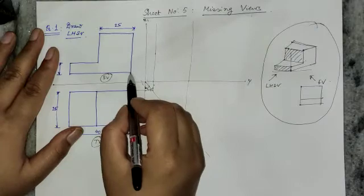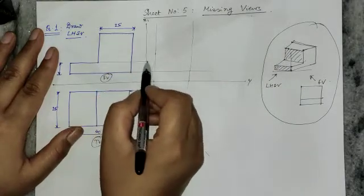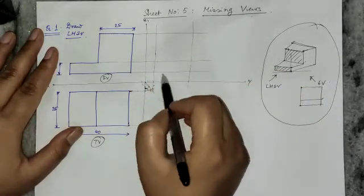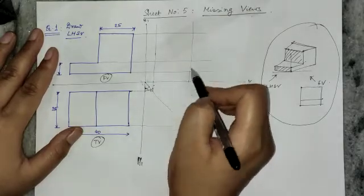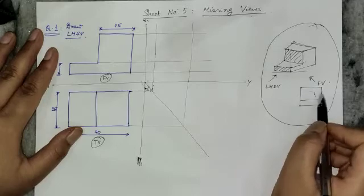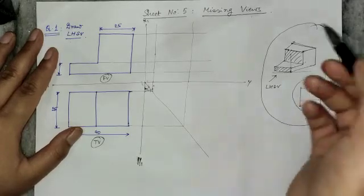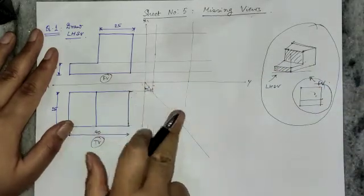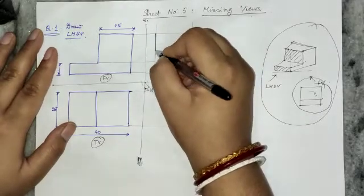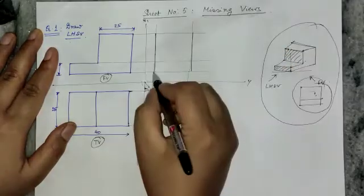Draw projection lines from the front view. You can see that these faint lines indicate the side view — so I have put my imagination into reality by applying the principles of orthographic projection. Now I have to draw the final view, the left hand side view, by darkening these lines.